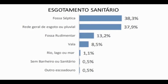A distribuição da população de acordo com o tipo de esgotamento sanitário aparece no próximo gráfico. Fossa séptica é o tipo de serviço presente para 38,3% da população, e a rede geral de esgoto ou esgoto pluvial está em 37,9% dos domicílios. Fossa rudimentar e vala abrangem respectivamente 13,2% e 8,5% dos domicílios no município.